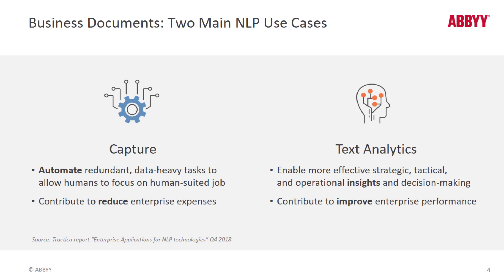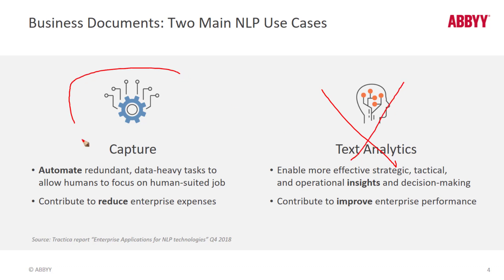For business document processing, natural language processing is applied in two main use cases: text analytics and data capture. For text analytics, we look to NLP to offer insights and help humans in their decision-making processes. In general, text analytics is used to improve enterprise performance. In our case, ABBYY is focused on data capture with NLP, using it to help reduce enterprise expenses and minimize the data-heavy tasks of capturing data from contracts and other section-formatted documents. So for ABBYY's use of NLP technology, it's really all about data capture.